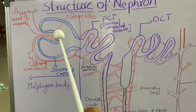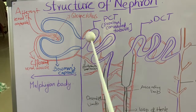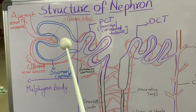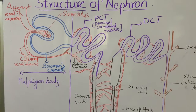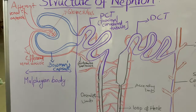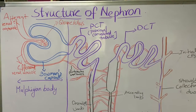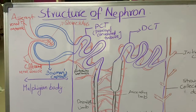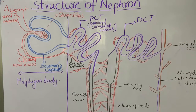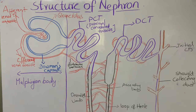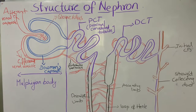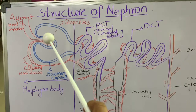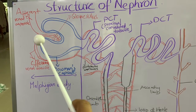Bowman's capsule consists of two layers: the outer layer and the inner layer, also known as the visceral layer. The inner layer consists of a special type of cells known as podocytes. These cells contain foot processes, which is why they are named podocytes. They are arranged in an intricate manner and leave small spaces known as filtration pores.